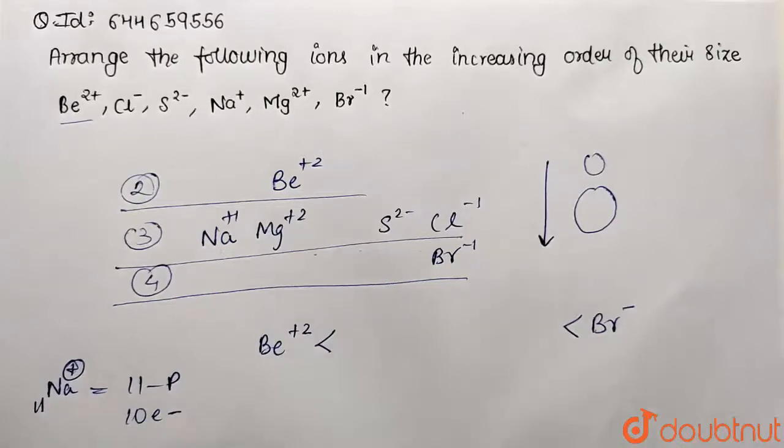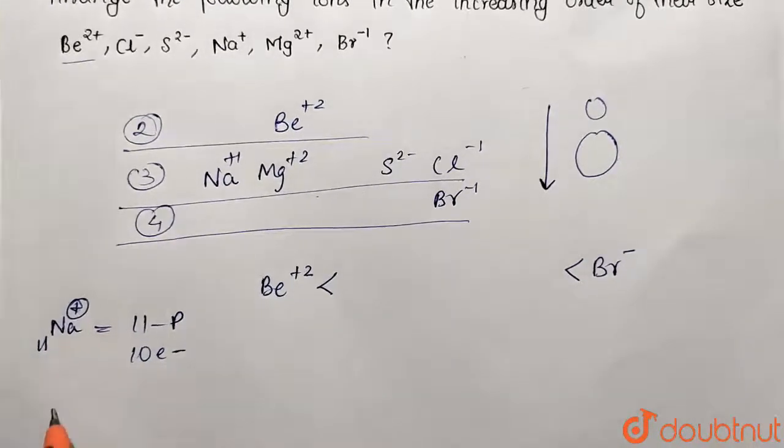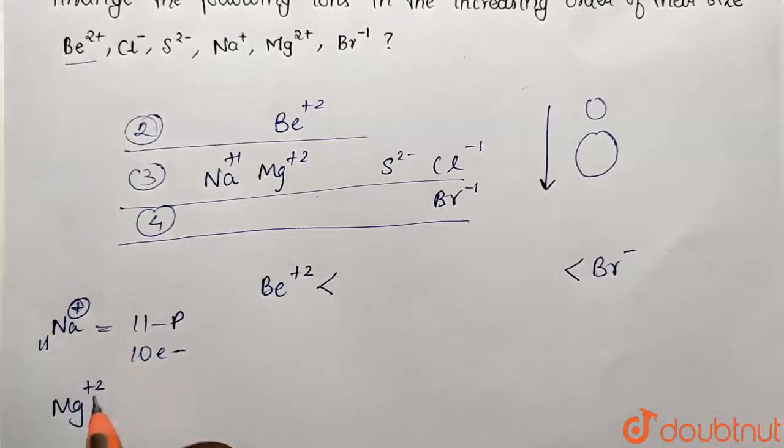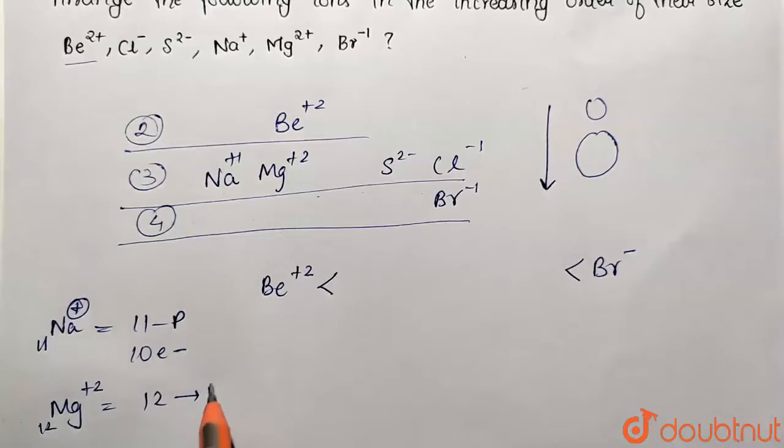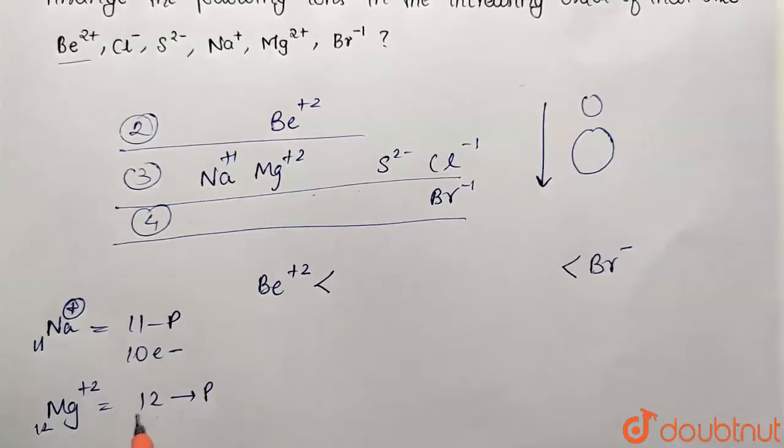Now 11 protons are balancing 10 electrons. Similarly, consider magnesium. So magnesium diapositive ion - how many protons are there? 12 protons will be there, and it is balancing how many electrons? 10, because 2 electrons will be ionized, so it is containing 10 electrons.